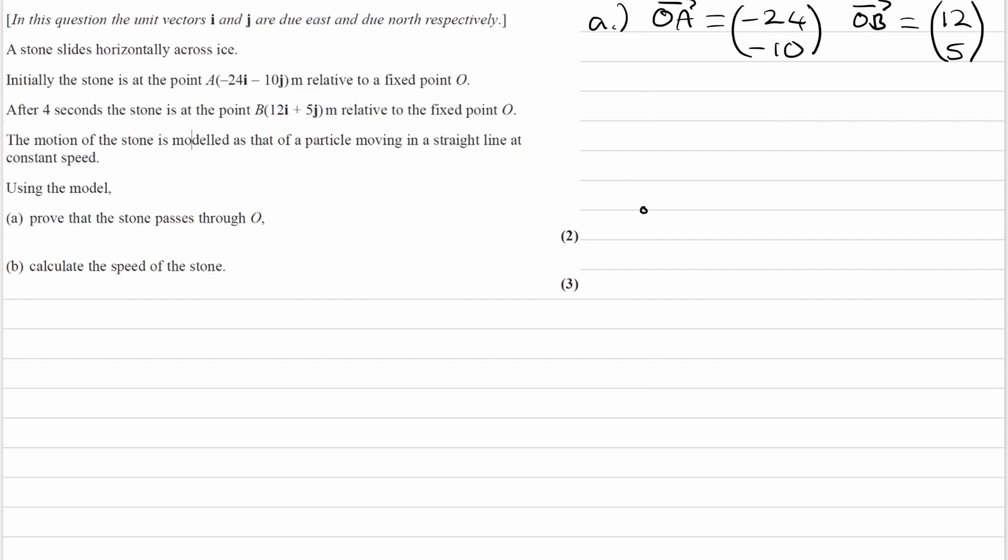Let's draw this out. Here is position vector A, or point A, and here is point B. O would be somewhere over here.